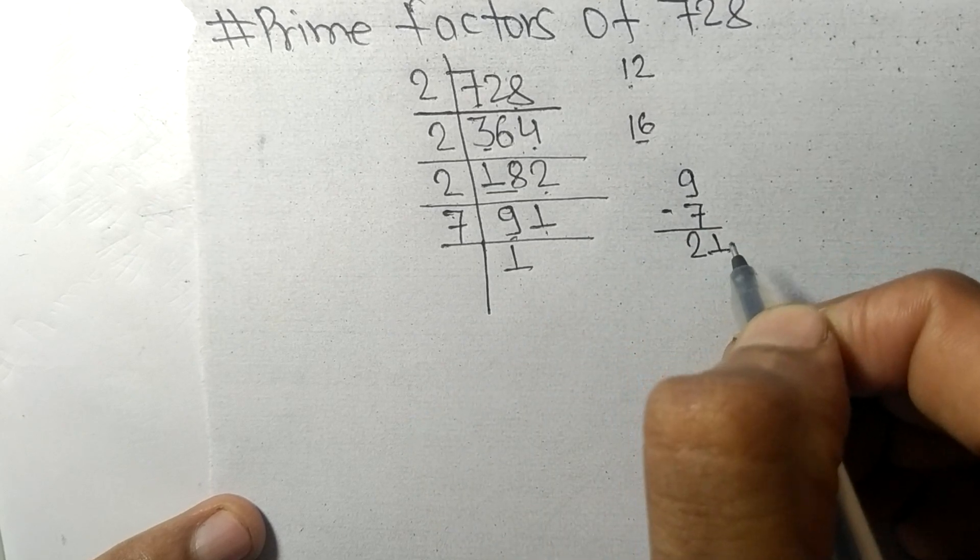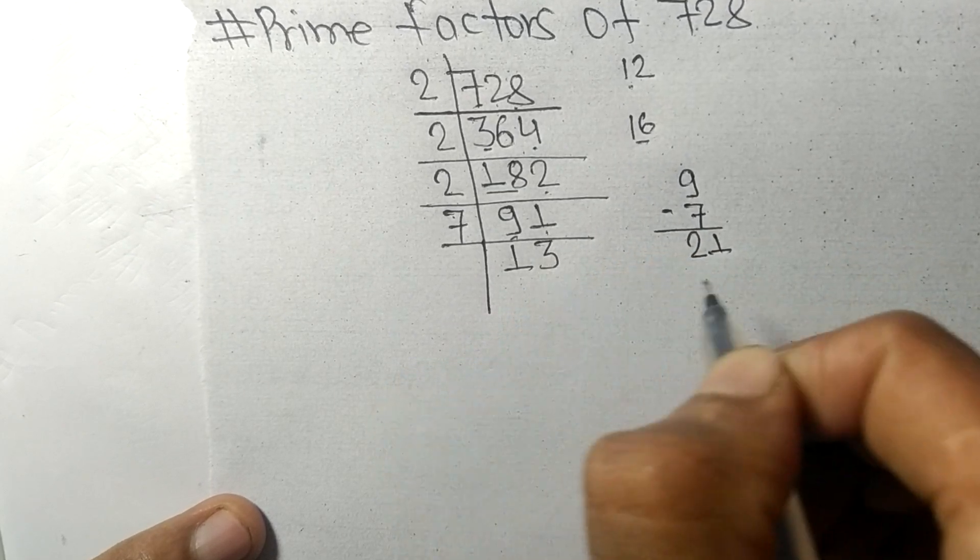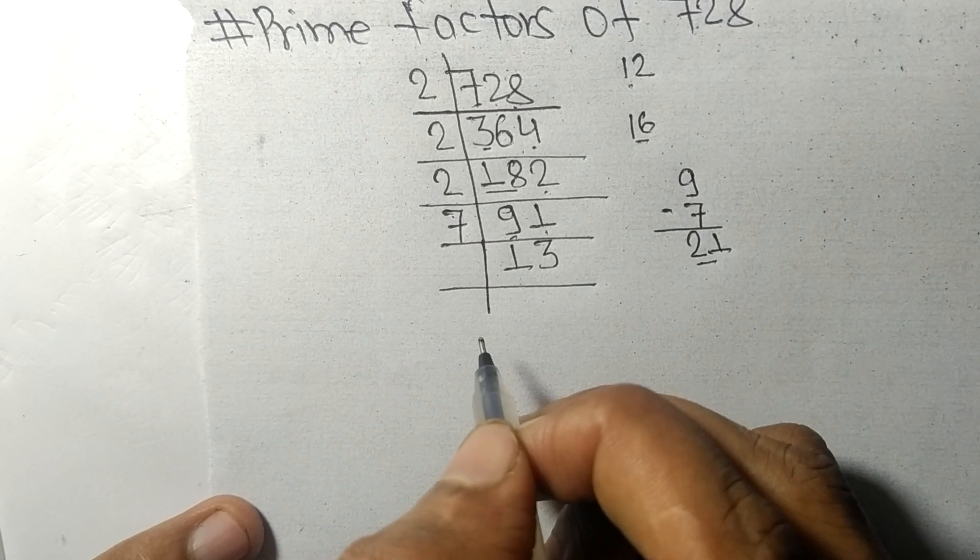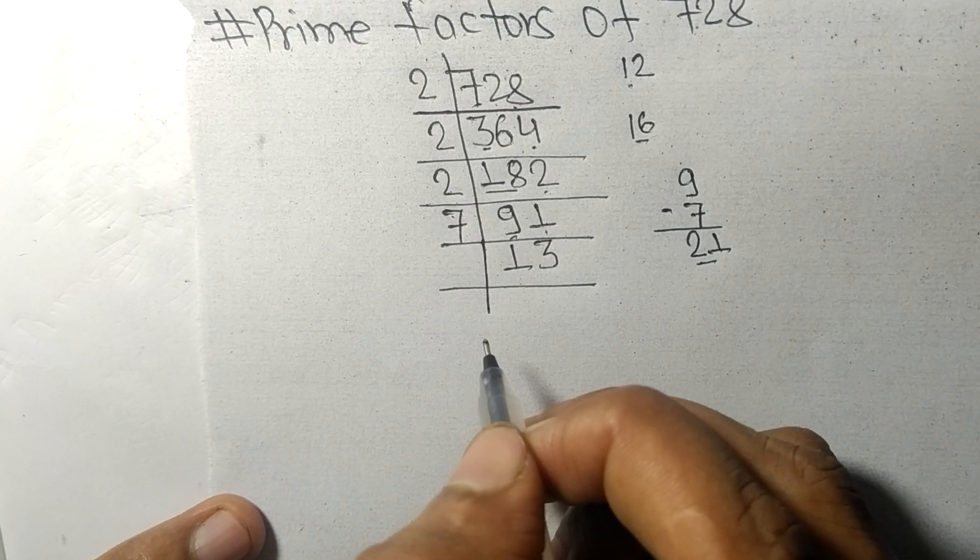13 is a prime number, so it is divisible by 13 itself, and on dividing we get 1.